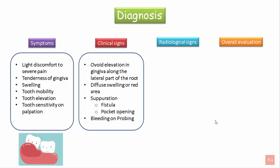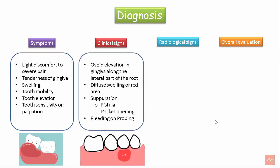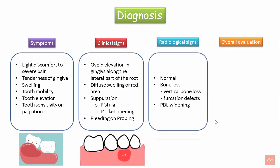Clinical signs include ovoid elevation in the gingiva along the lateral part of the root, diffuse swelling or red area, suppuration through the fistula or the pocket opening, and bleeding on probing. Radiological signs can either be normal or they can show vertical bone loss or furcation involvement, and there can be widening of the periodontal ligament.